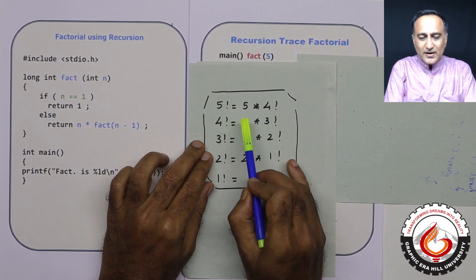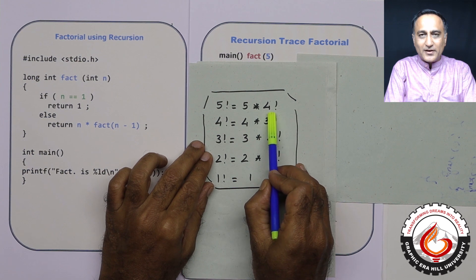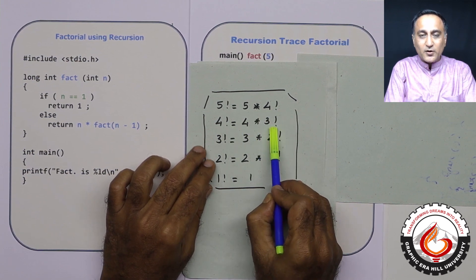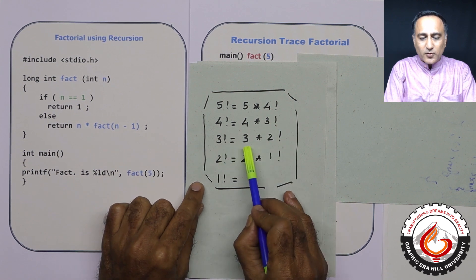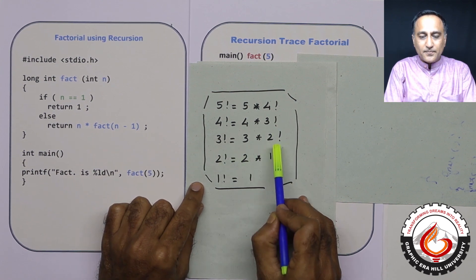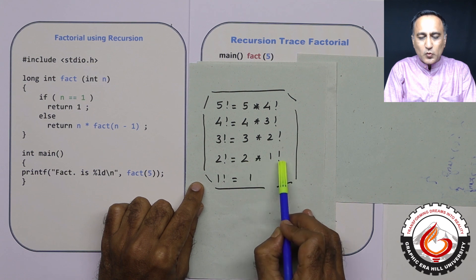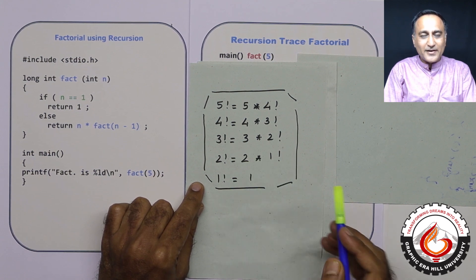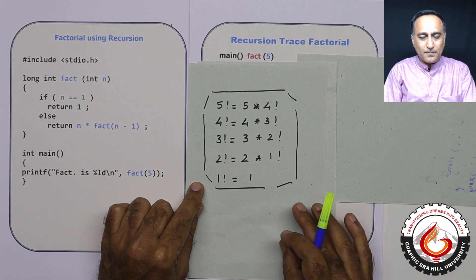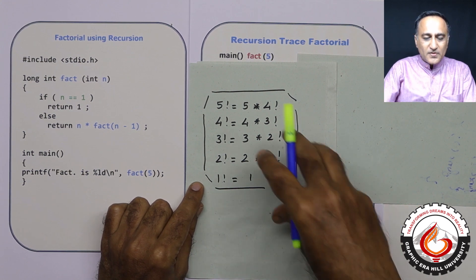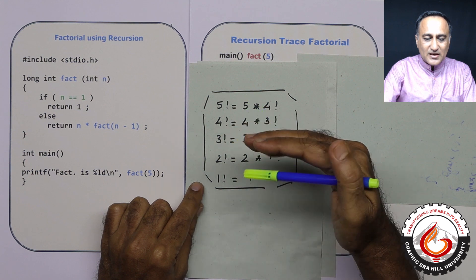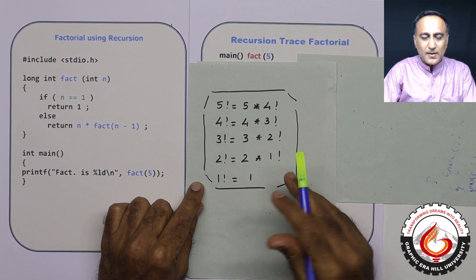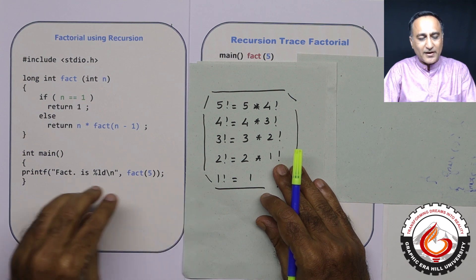5 factorial is 5 into 4 factorial. Similarly, 4 factorial is 4 into 3 factorial. 3 factorial is 3 into 2 factorial. And 2 factorial is 2 into 1 factorial. Finally, 1 is itself the factorial of 1. So this is the flow, the division of the problem into simpler steps, which will help me calculate the factorial of 5.